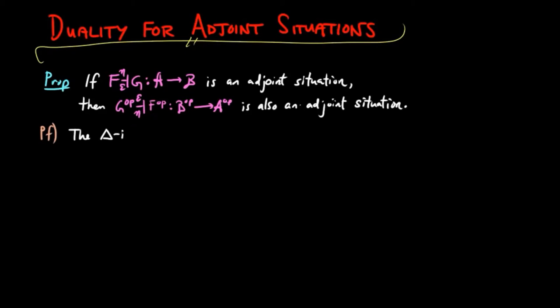To verify the triangle identities is immediate since 1 eta G op a G op epsilon a in the opposite category of B is defined to be the B morphism G epsilon a eta G a in B. And then by the triangle identity for FG, this is just the identity on G a.